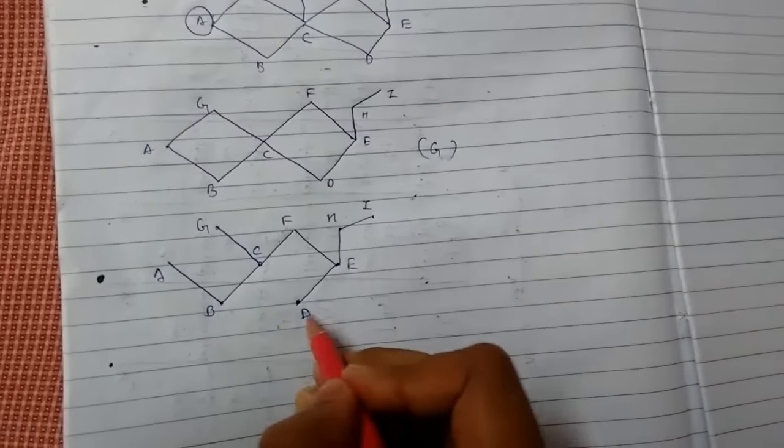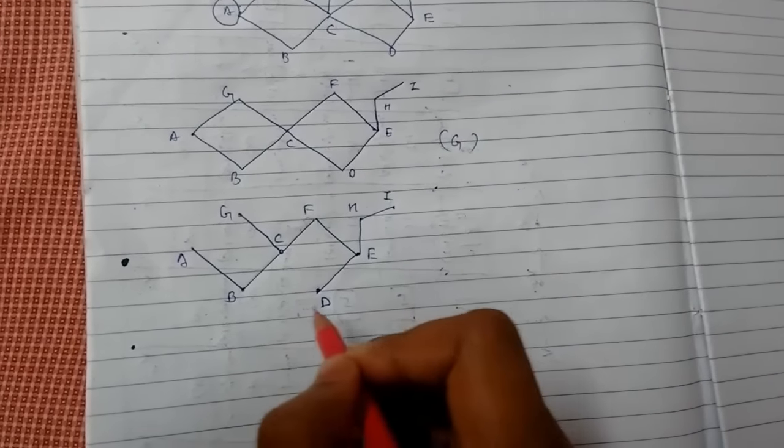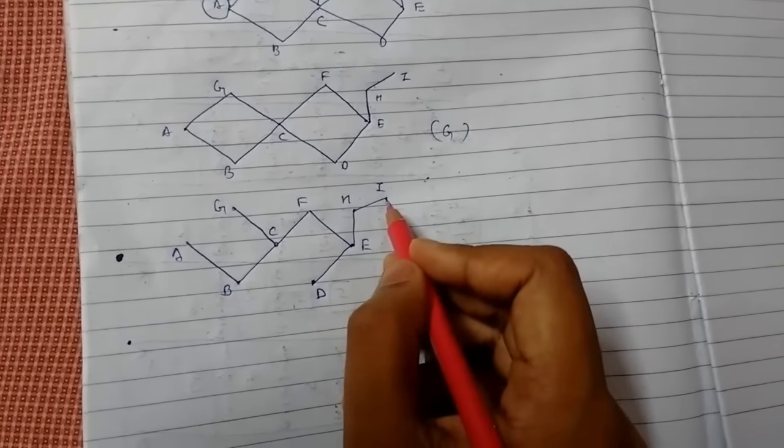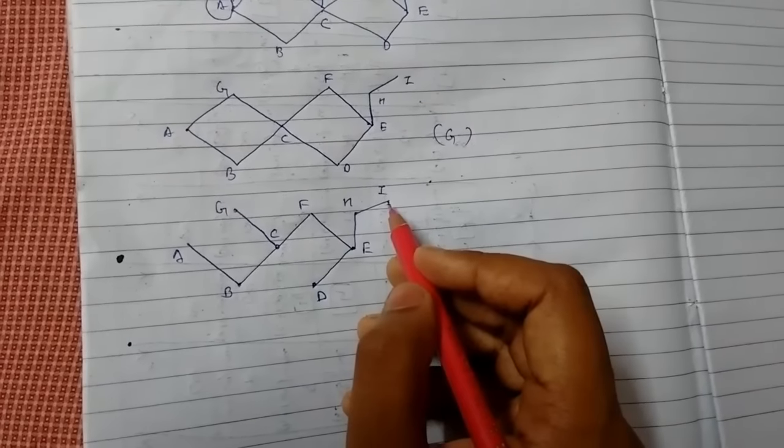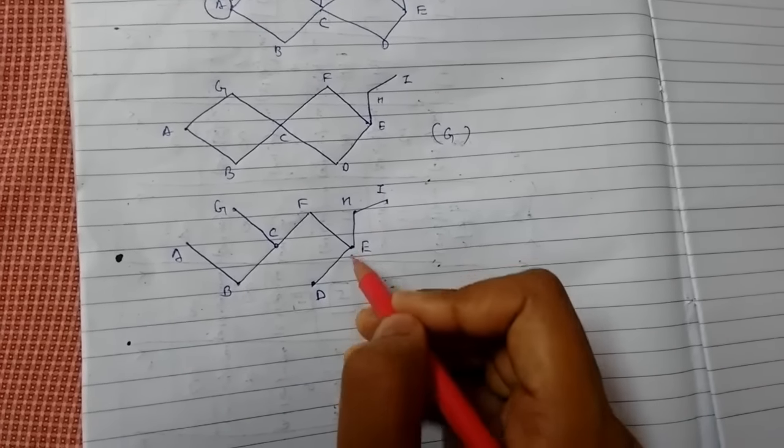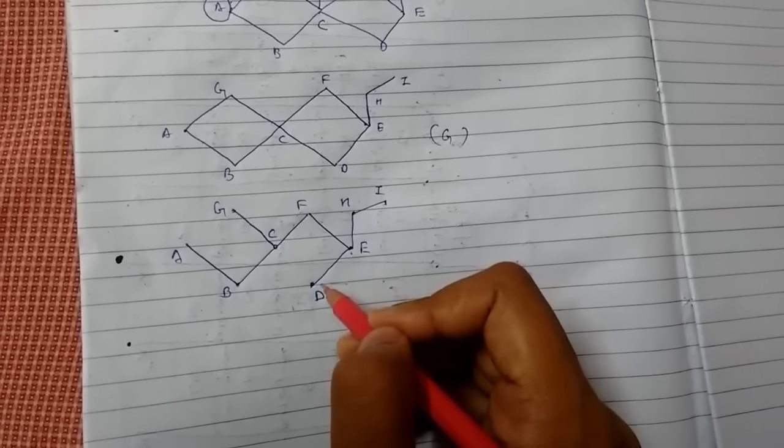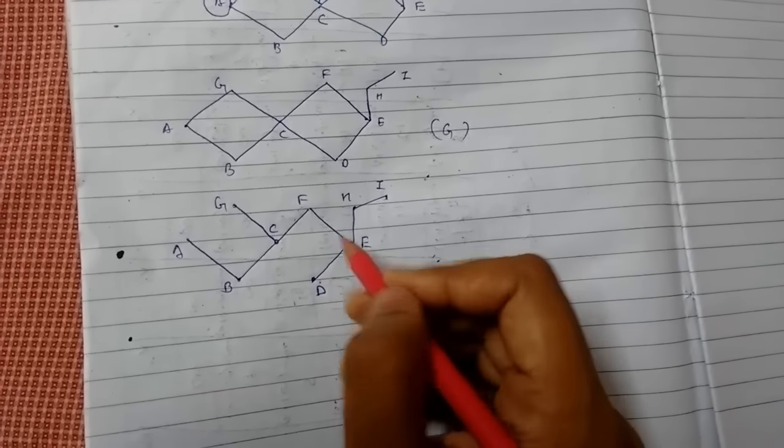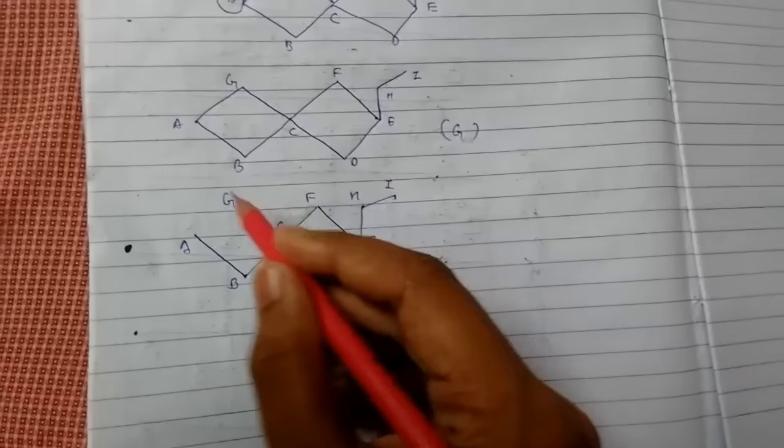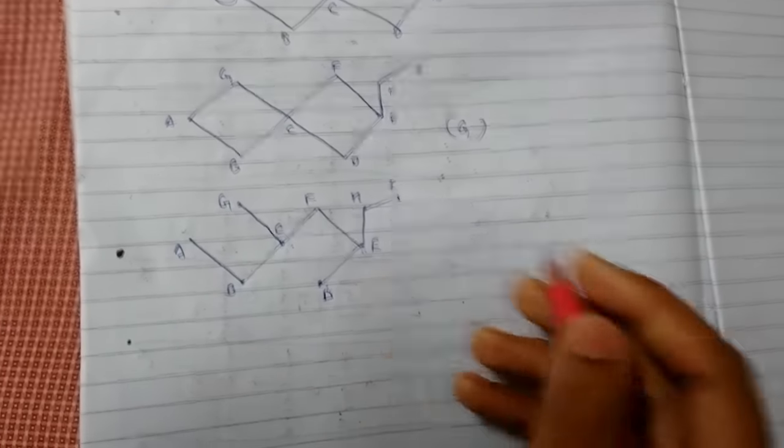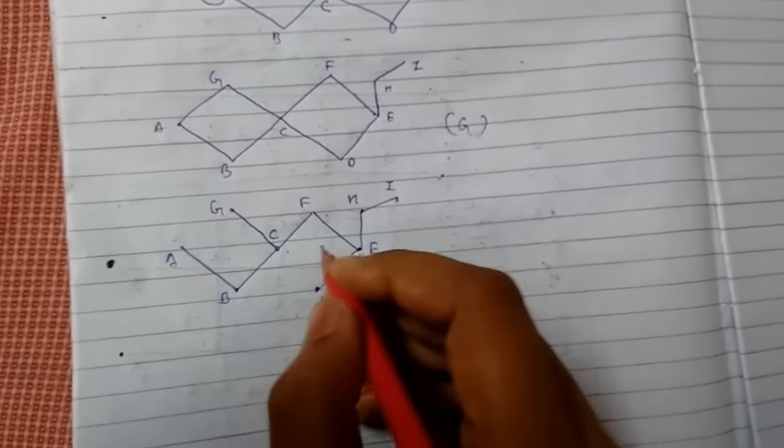This backtracking, let me write it in the statements. Our final vertex was I. By backtracking we first moved to H then E. Then we made our edge. Then again from D we backtracked D, E, F, C. Then we made our edge and completed the spanning tree. This method is also known as backtracking method.